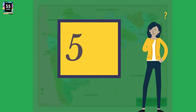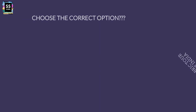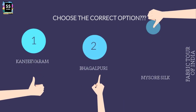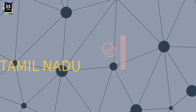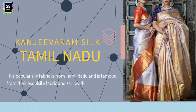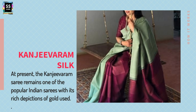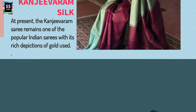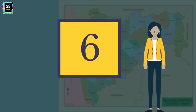State 5 on our list: Which is the famous textile of Tamil Nadu? The options are: Is it Kanjivaram? Is it Bhagalpuri? Or is it Mysore Silk? It is Kanjivaram from Tamil Nadu. This popular silk fabric is famous all over the world; many celebrities have worn it, and Kanjivaram remains one of the most popular Indian sarees, with its rich depiction of gold.